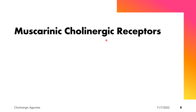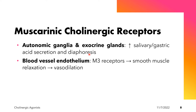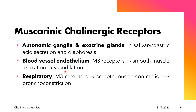The physiological effects of muscarinic receptors include effects on the autonomic ganglia and exocrine glands: there is increased salivary and gastric acid secretion, and diaphoresis or increased sweating. In terms of the blood vessel endothelium, activation of the M3 receptor leads to relaxation of smooth muscles and vasodilation. In the respiratory system, M3 receptor activation causes smooth muscle contraction, or bronchoconstriction.